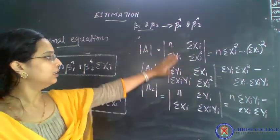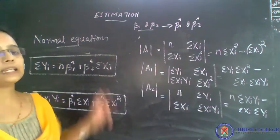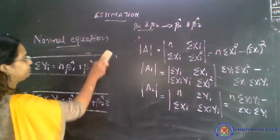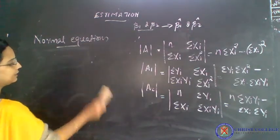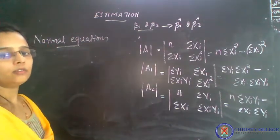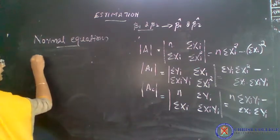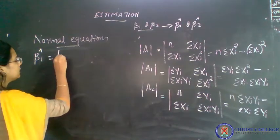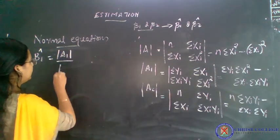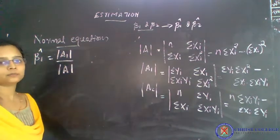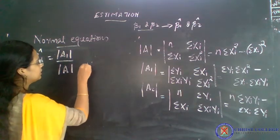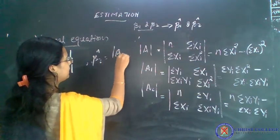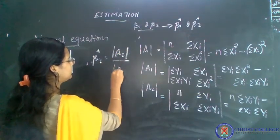We have found out determinant A, determinant A1, and determinant A2. From this, we can find out the value of beta 1 hat. Beta 1 hat will be equal to determinant A1 divided by determinant A. Similarly, beta 2 hat will be equal to determinant A2 divided by determinant A.